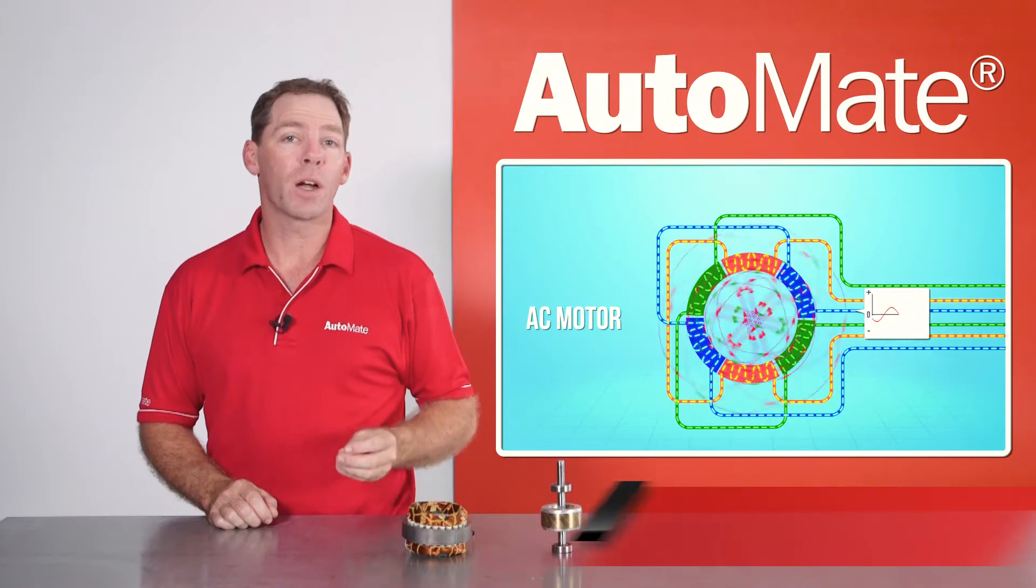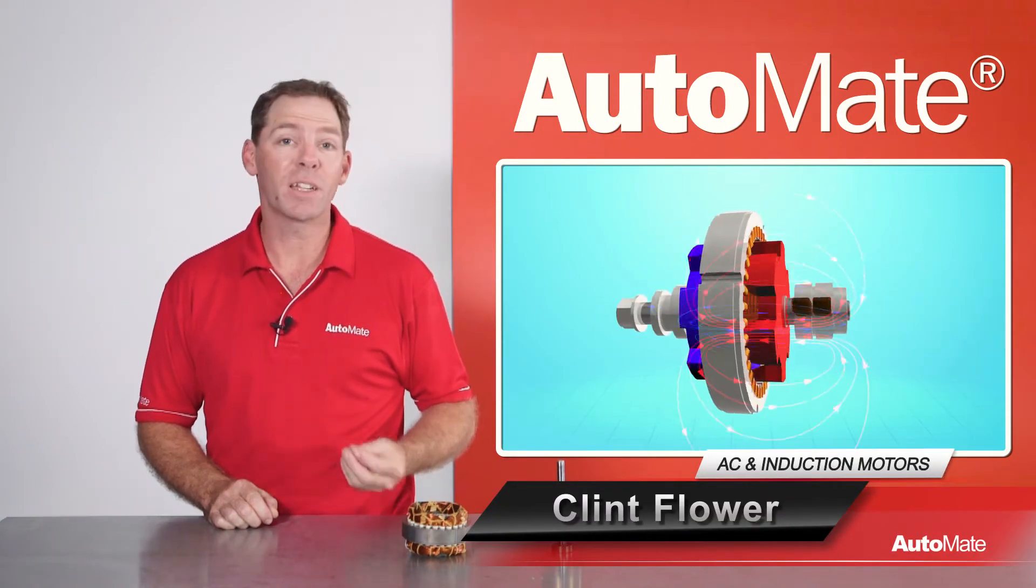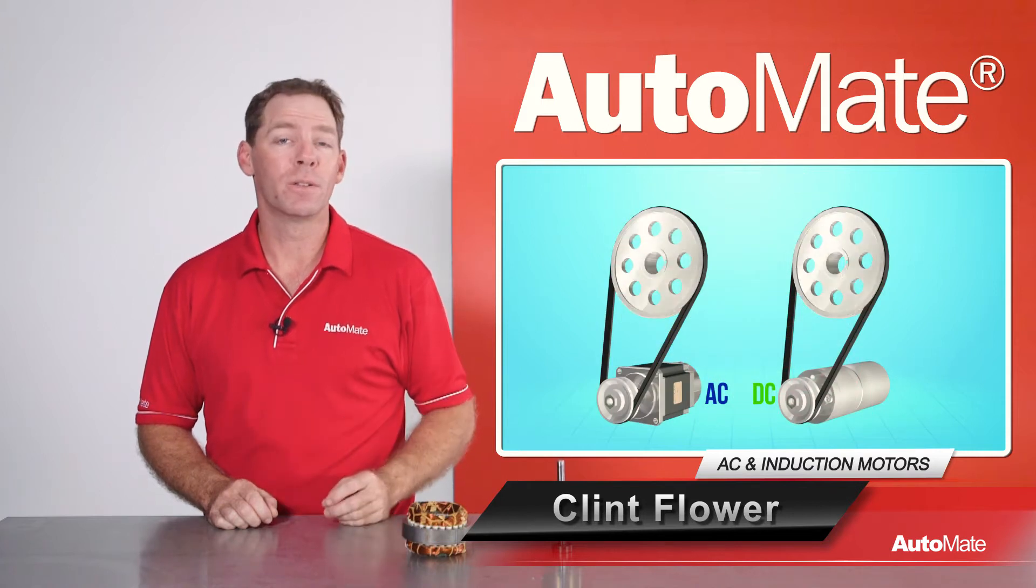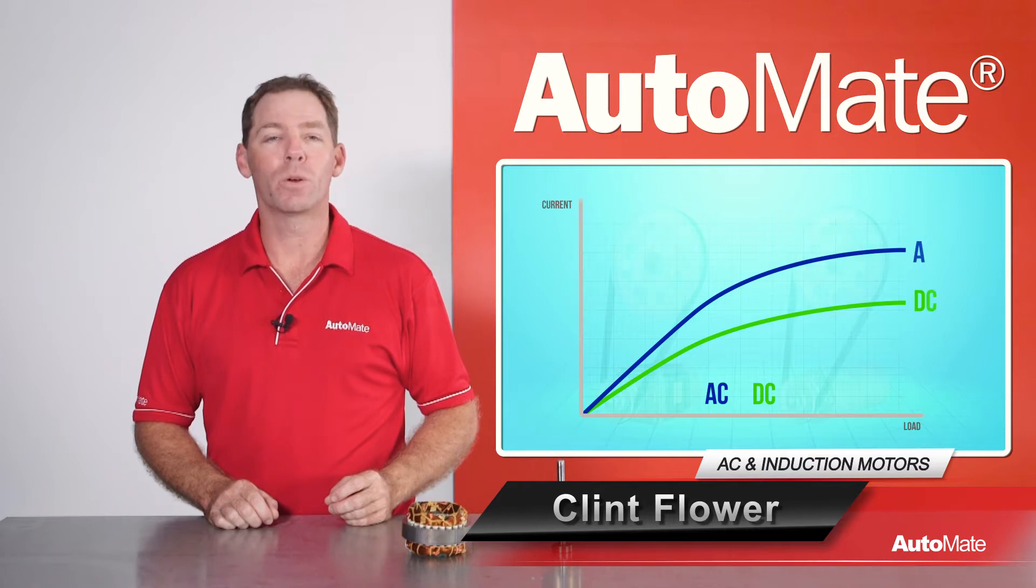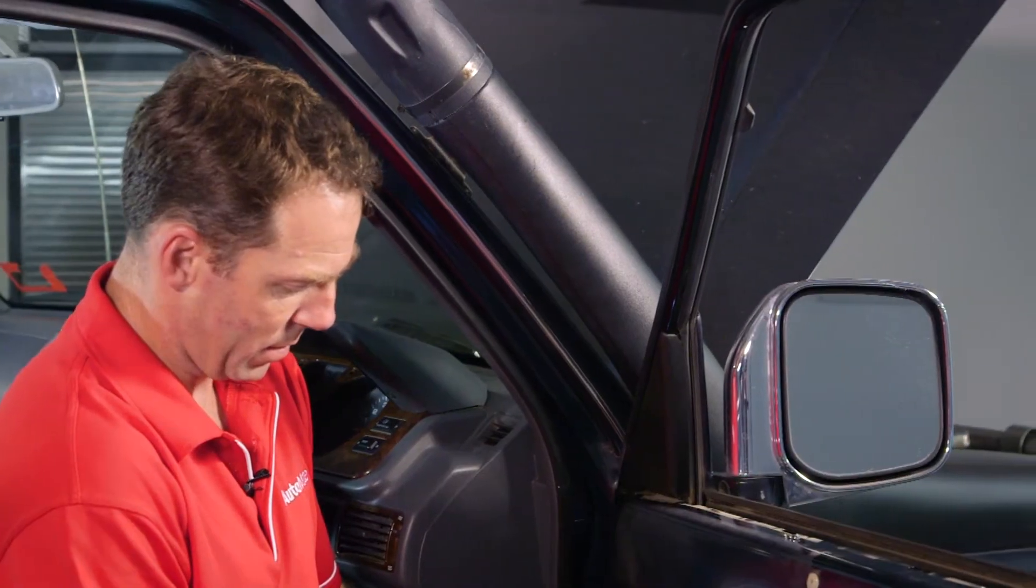We're starting to see alternating current motors in many vehicle systems, from steering to air conditioning to vehicle propulsion. Do you understand how these motors work? Hi, I'm Clint. Welcome to AutoMate. Most vehicles as we know them use a battery to produce DC current.